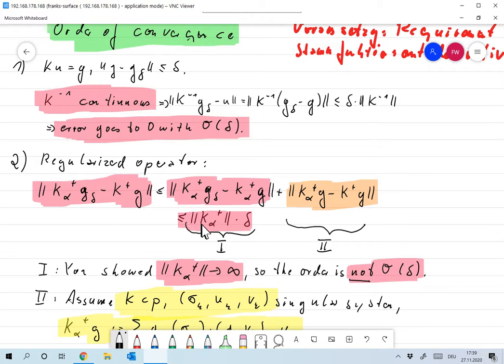This over here is less than the norm of K alpha plus times delta. K alpha plus is a continuous operator if that's a regularization. So this is limited by norm of K alpha plus times delta and that's really a number. And there's a second term over here and we'll look at that in a little bit more detail later.